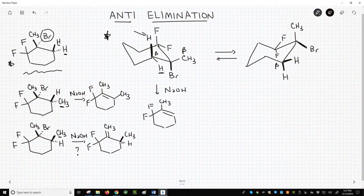So E2 reactions are more favorable if the beta-hydrogen and leaving group can have an anti-relationship. The E2 reaction is often called an anti-elimination, which is the title we have at the top of the screen.